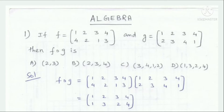PGTRB Mass Algebra. Previous questions and solutions. First question: if F equals one permutation and G equals another permutation, then F composite G has 4 options.